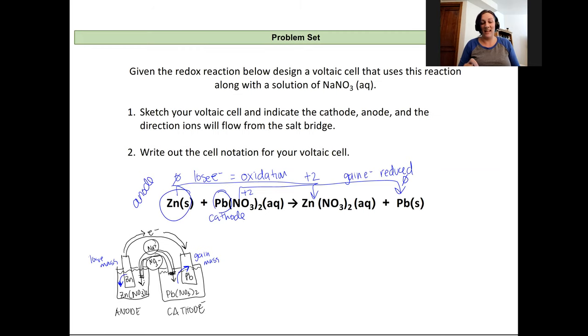The anions will go into the anode side. That actually makes it easier to remember because they're both A. So that is my voltaic cell drawn all the way out.